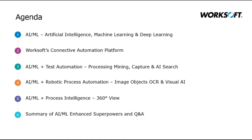Our agenda today will cover a couple things. We're going to talk about what are these acronyms that people throw around — AI and ML specifically — and give you a little bit more detail about what those terms mean: artificial intelligence, machine learning, and even deep learning. We'll give you an overview of the WorkSoft connective automation platform and then talk about the three pillars: test automation, robotic process automation, and process intelligence. Finally, we'll wrap up with a quick summary and some questions.